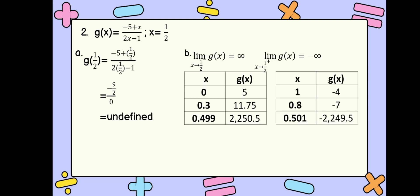We are going to check for the limits using one-sided limits. The limit of g of x as x approaches 1 half from the left, and the limit of g of x as x approaches 1 half from the right. The limit from the left goes to positive infinity, and the limit from the right goes to negative infinity. Since our limits go to infinity, we can conclude that the discontinuity is infinite discontinuity.